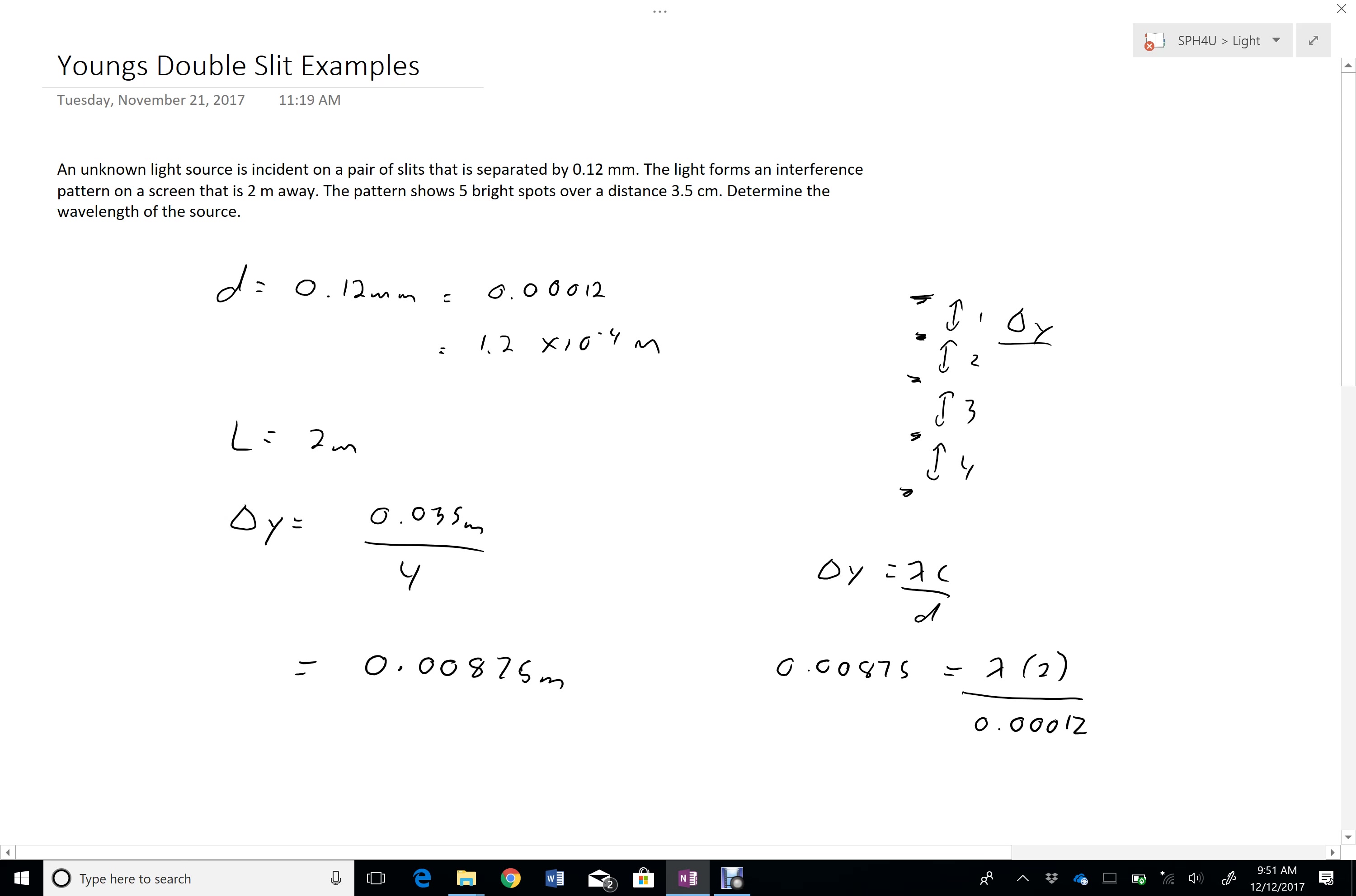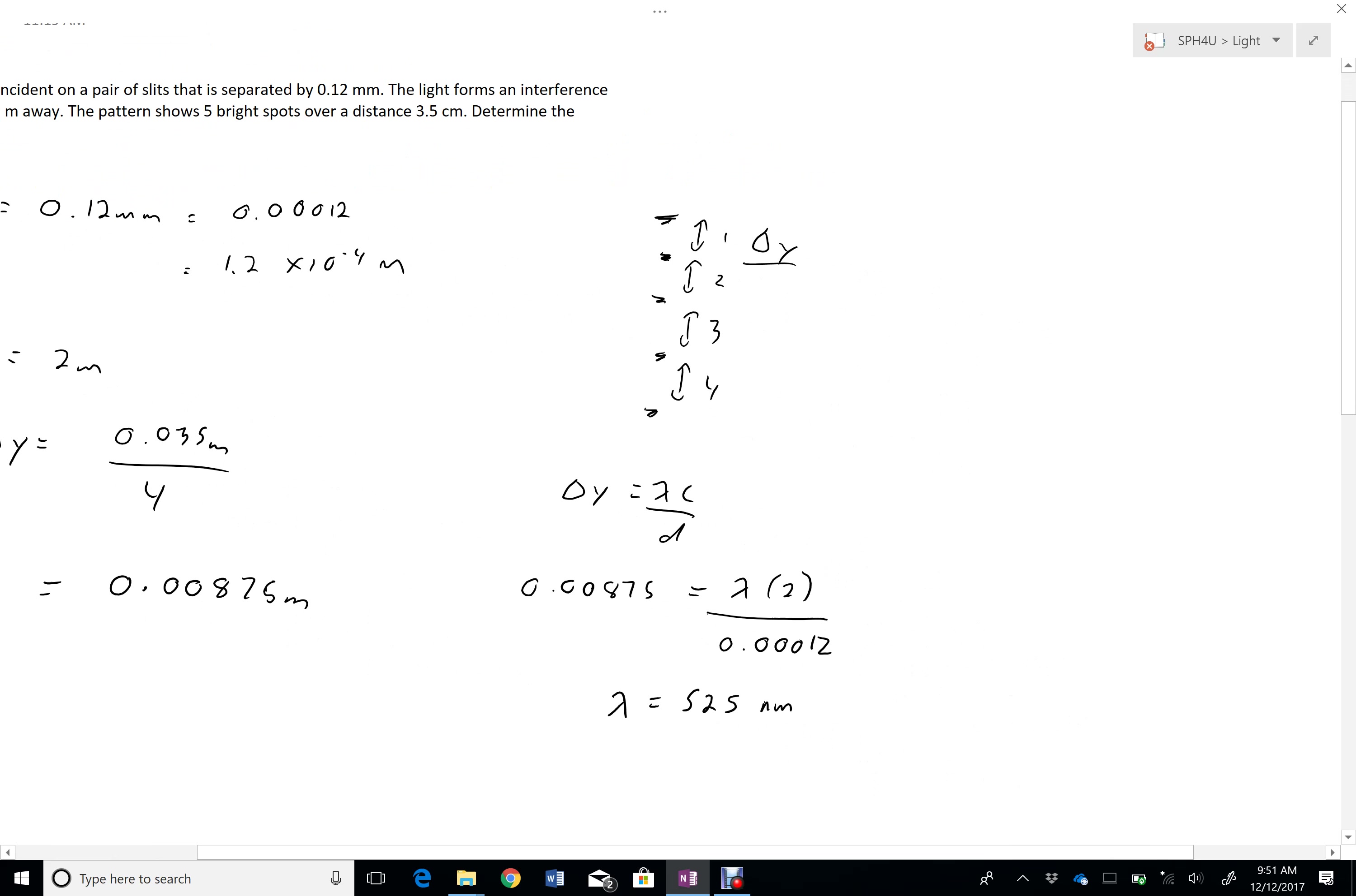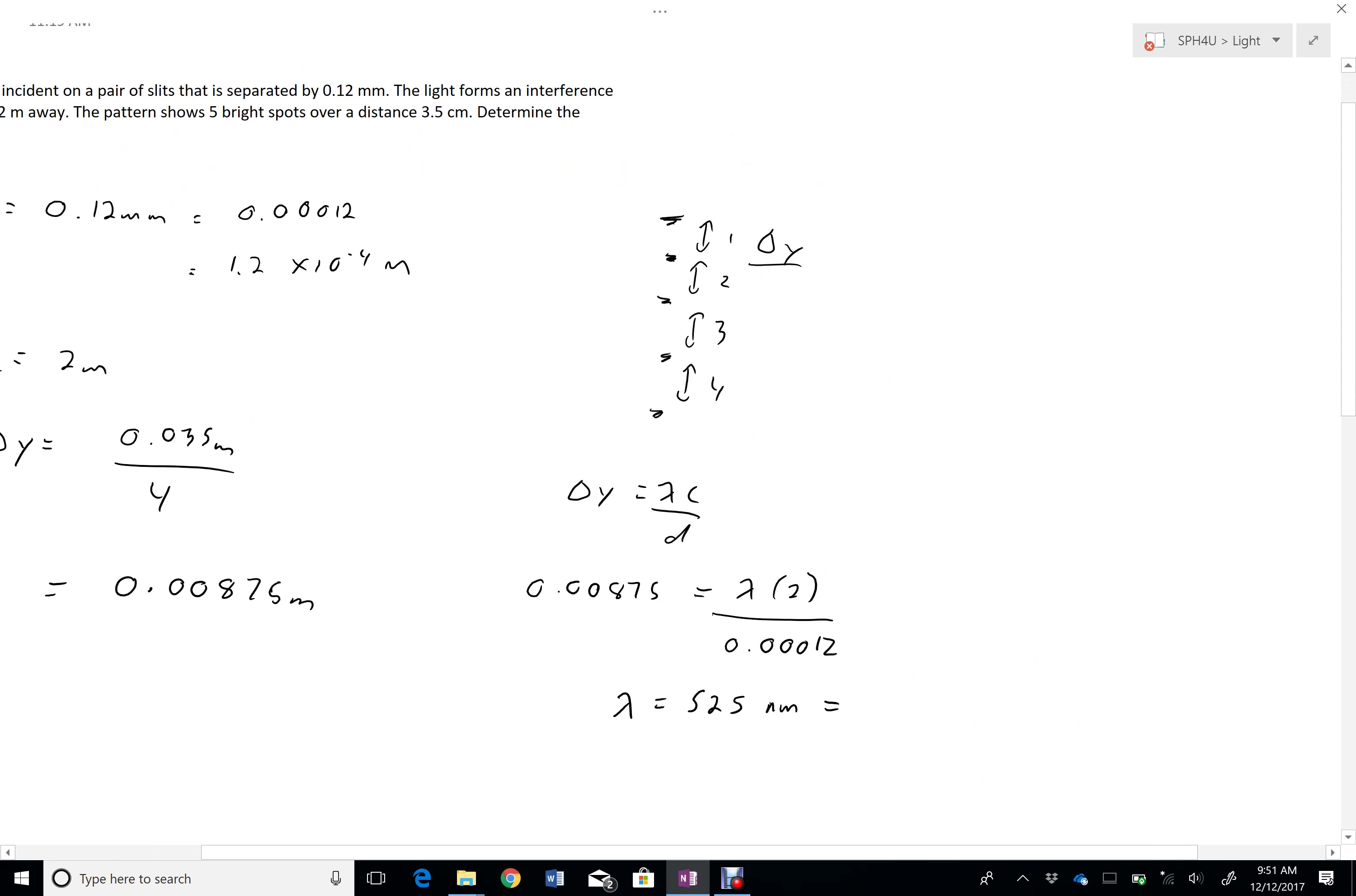Okay, so 0.00875 times 0.00012 divided by 2, and I get a wavelength of 525 nanometers. Sorry, I'm skipping a step here. My calculator says 5.25 times 10 to the negative 7 meters.